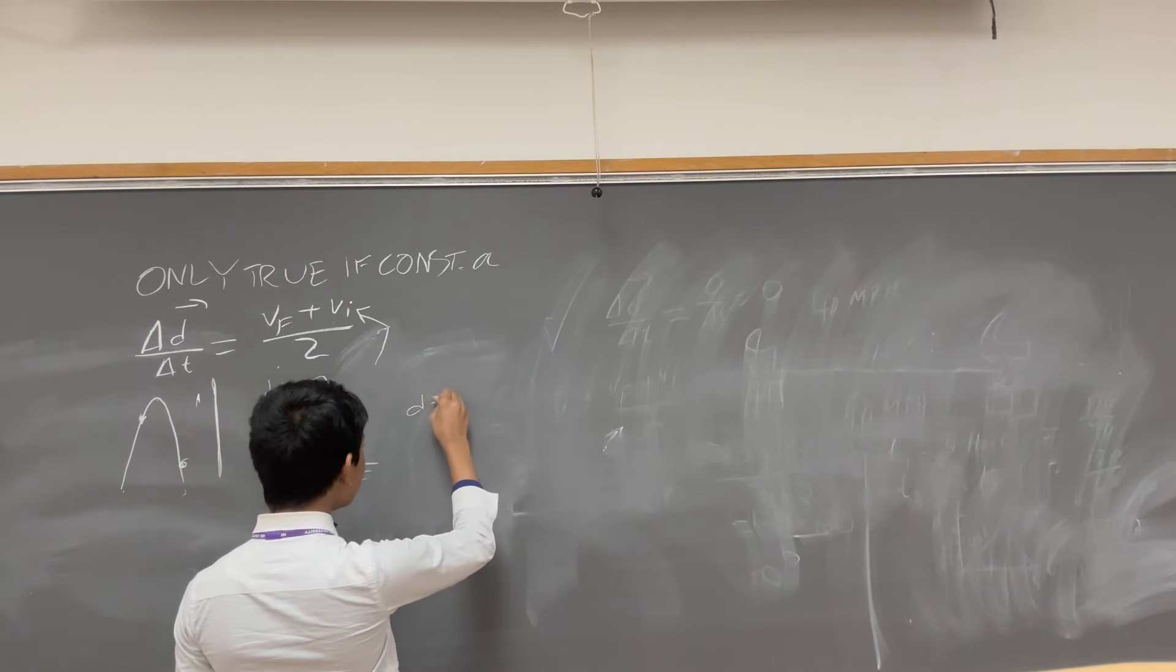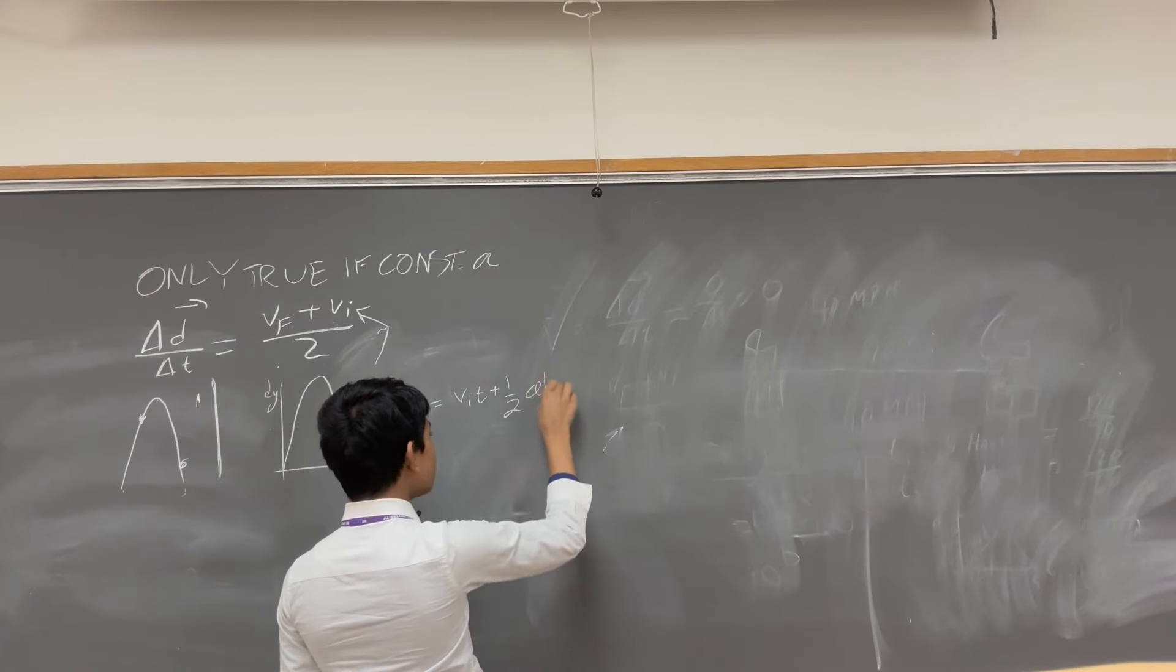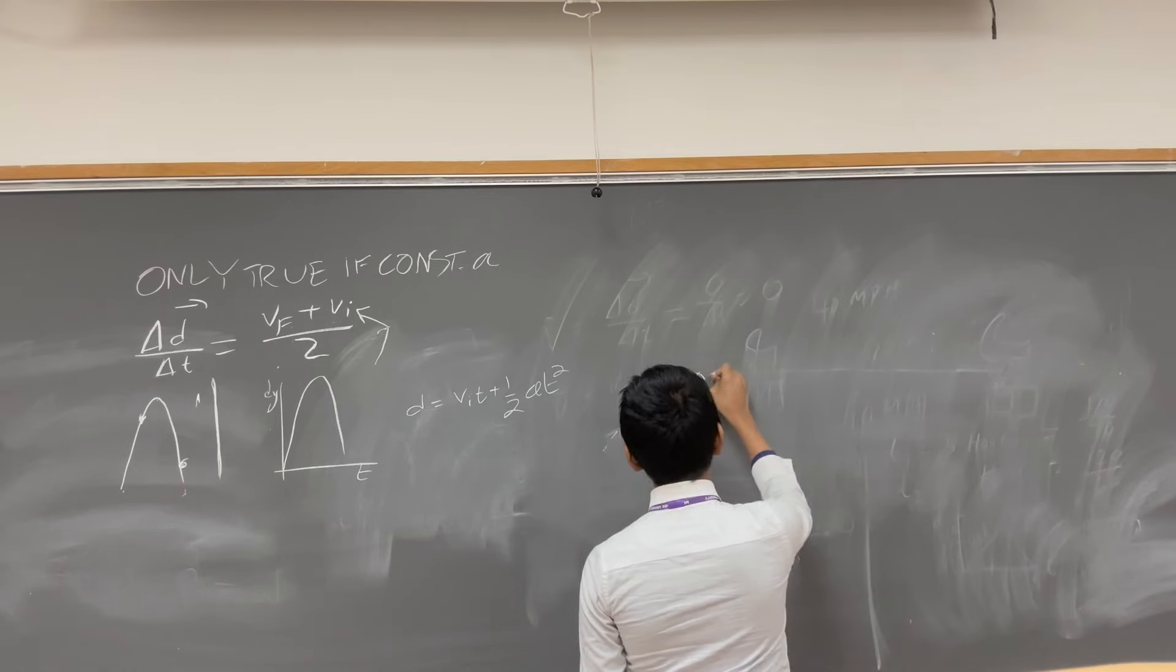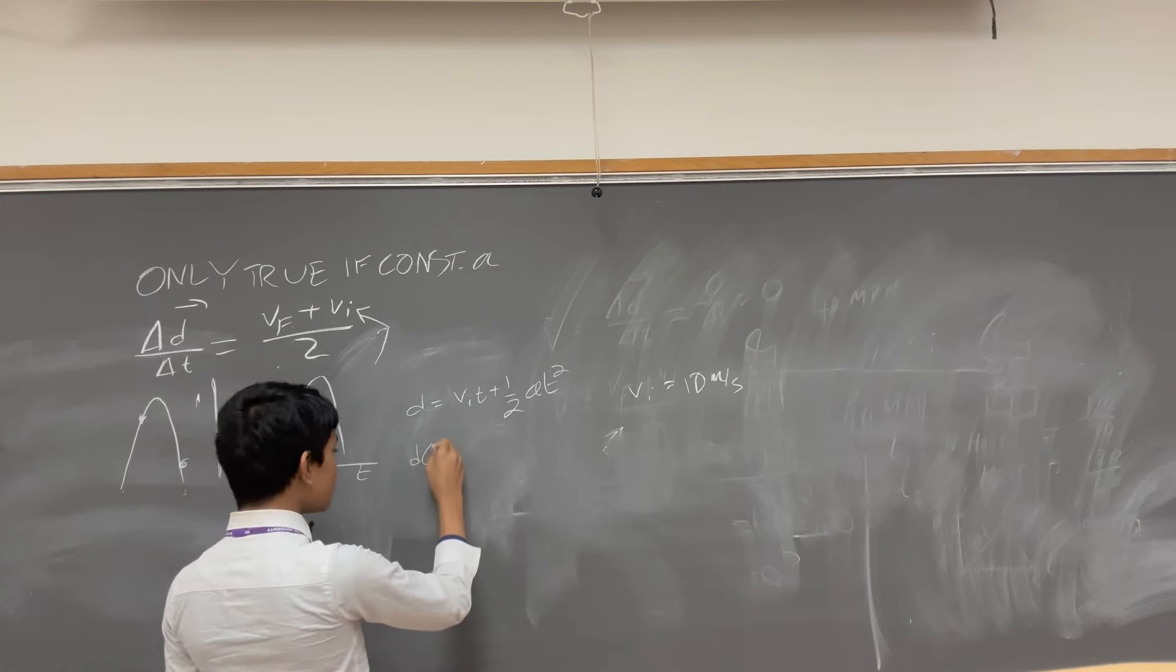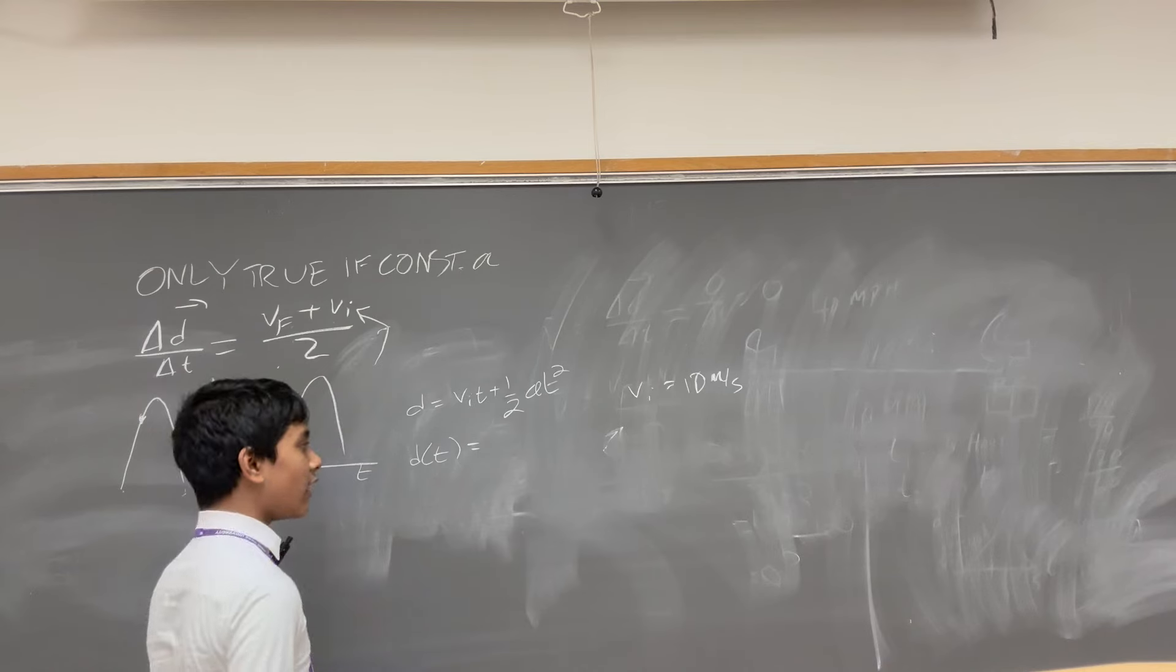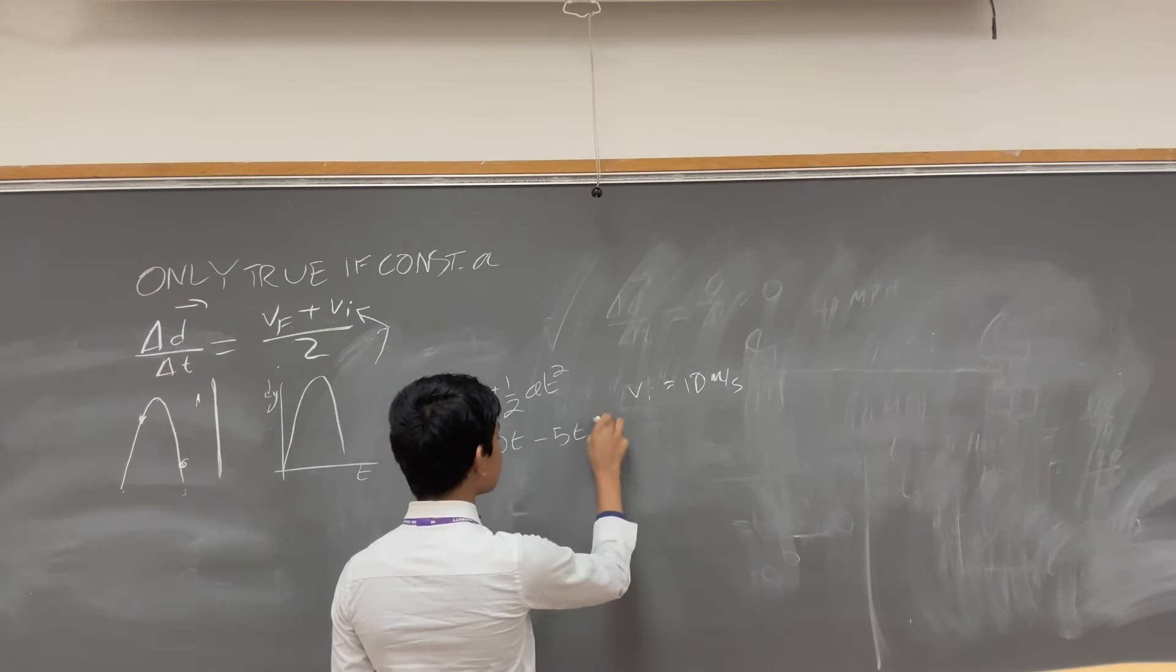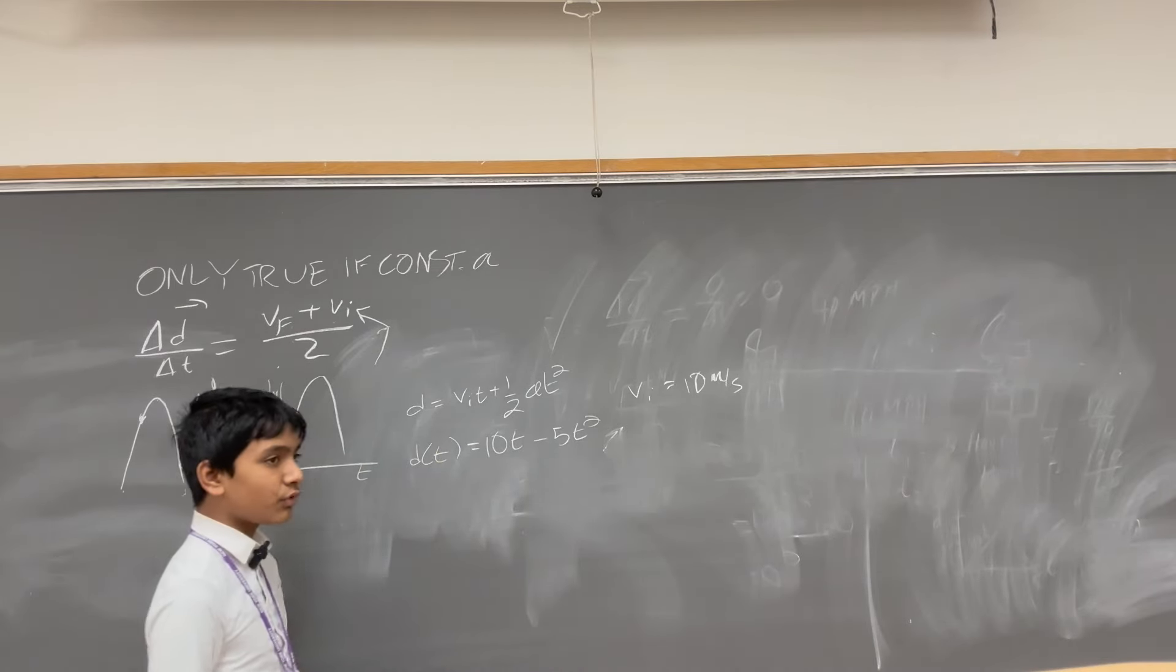So, how do we figure this out? Well, we know d equals vi t plus half a t squared. So, to ground this problem in reality, let's say we're throwing it up with an initial velocity in the y direction only of 10 meters per second. So, that means the distance as a function of time is equal to Vi, which is 10t plus half a, so minus 5, because that's half g, t squared.